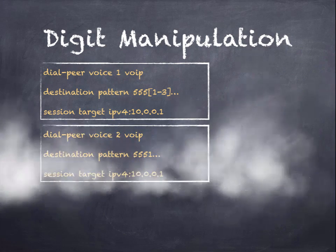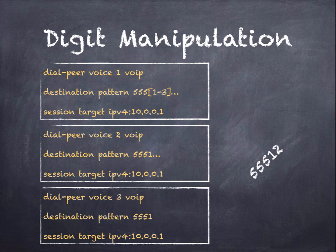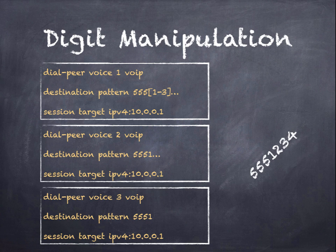Given three dial peers, which one matches 555-1-2-3-4? The router looks for the longest digit match and the first digit match. It will match the second dial peer. However, as soon as you dial 555-1, you'll have a match with dial peer 3 — before you have a chance to dial 2-3-4, it will have already matched dial peer 3. So dial peer 3 actually trumps dial peer 2, because the router compares digits as you're dialing them and acts as soon as a match is found.